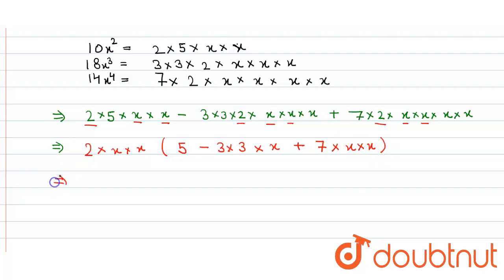So now we simply solve it. Here it is 2x² multiplied by (5 - 9x + 7x²). This is the factorization of the given question and that's our answer.